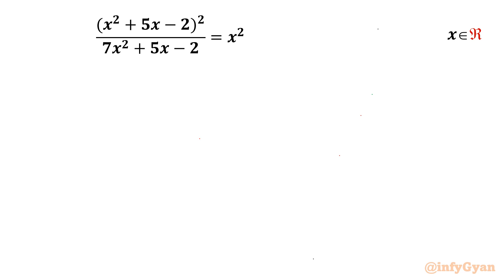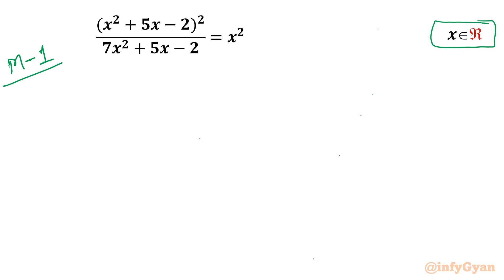Welcome back to Infigyan friends. In this video we are going to take up one very interesting and challenging question from algebraic equations. Here we have (x² + 5x - 2)² over (7x² + 5x - 2) equal to x². We have to find out real solutions, real x values. I am going to show two different styles to solve this problem.